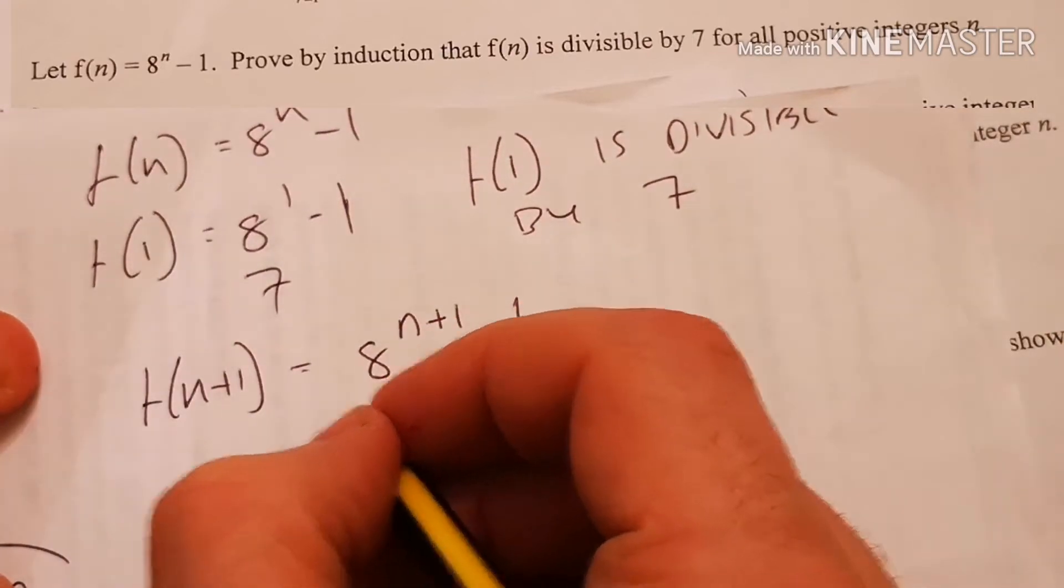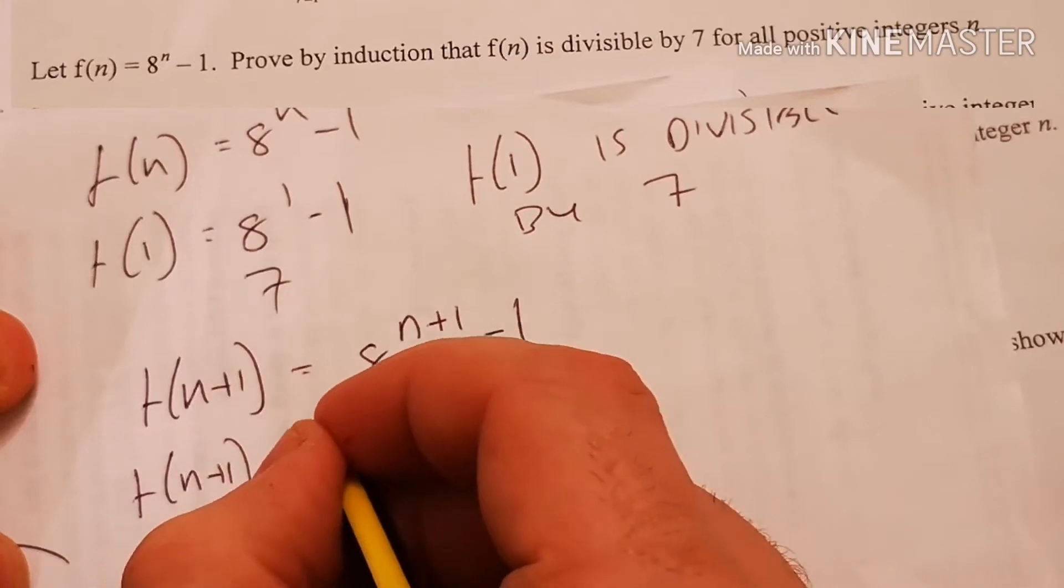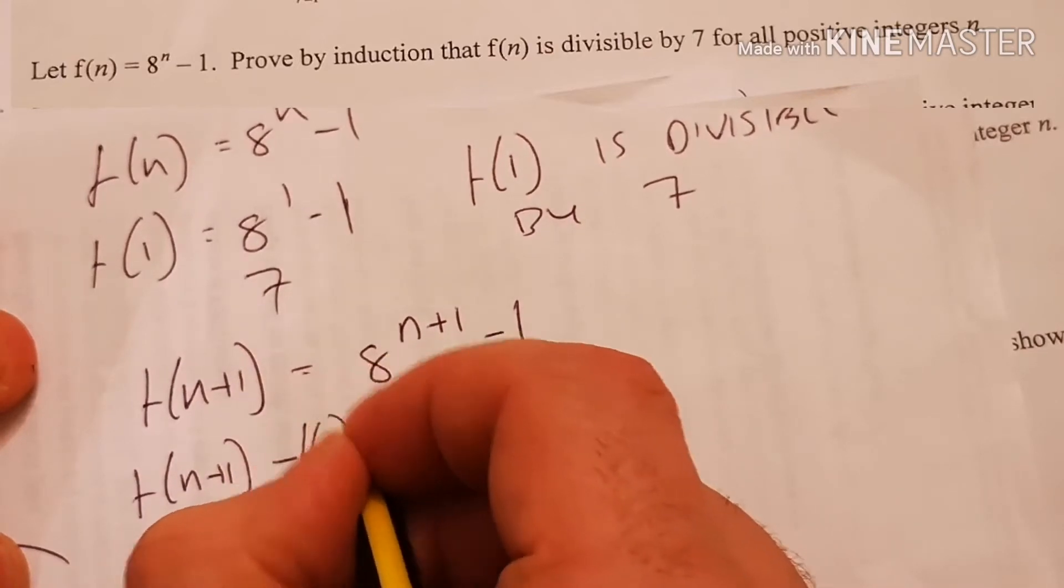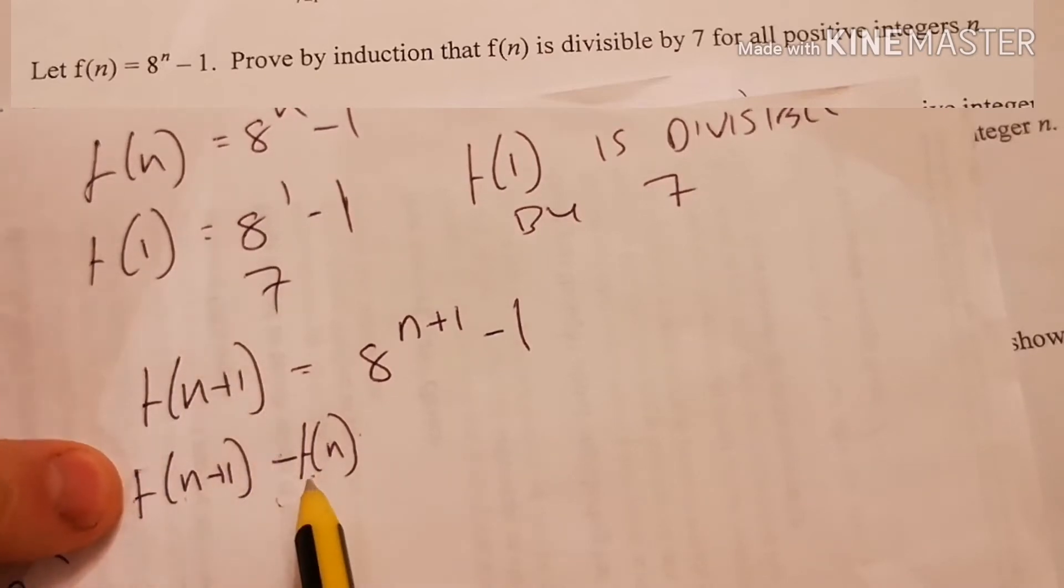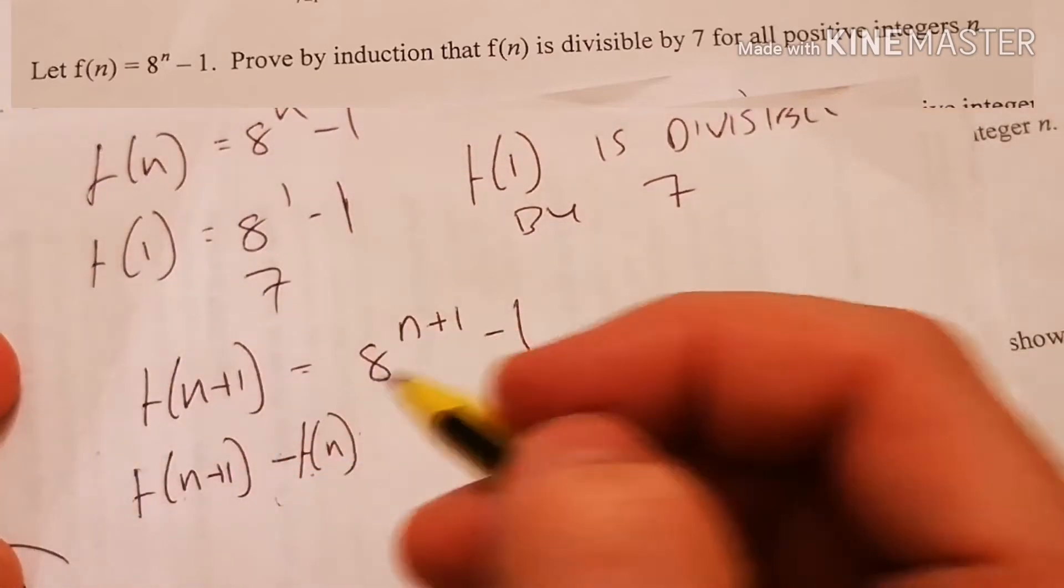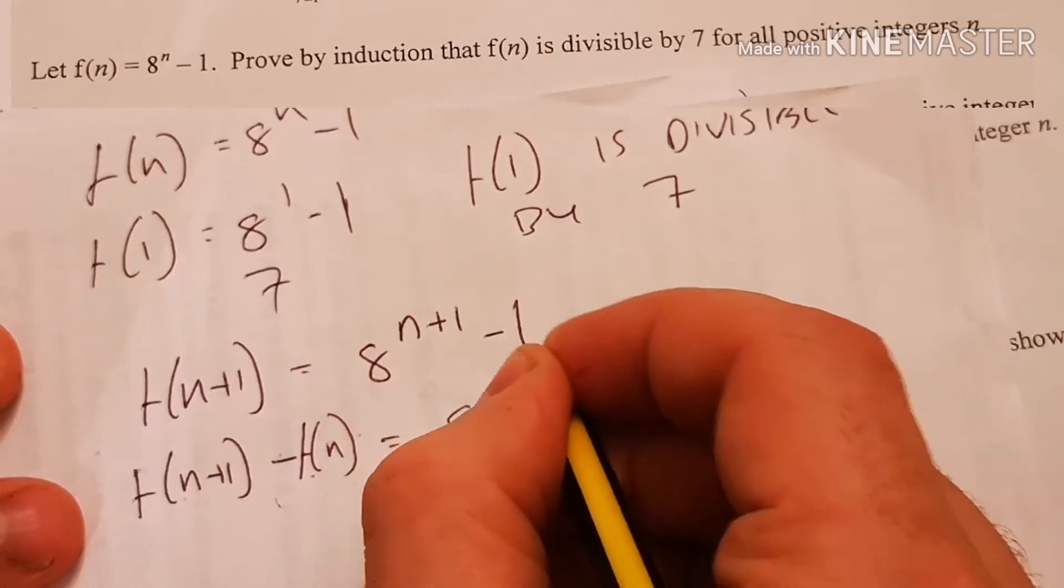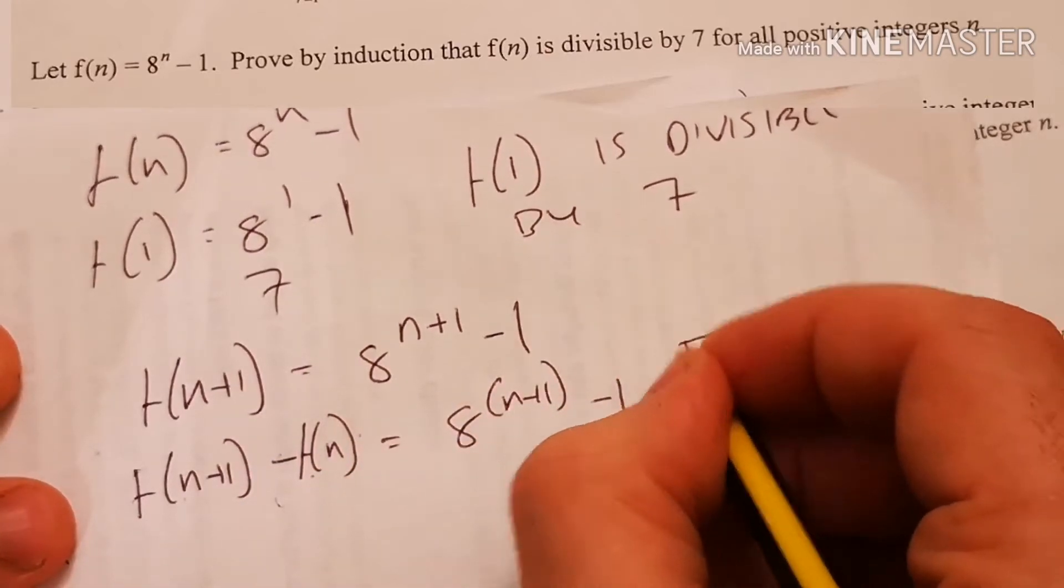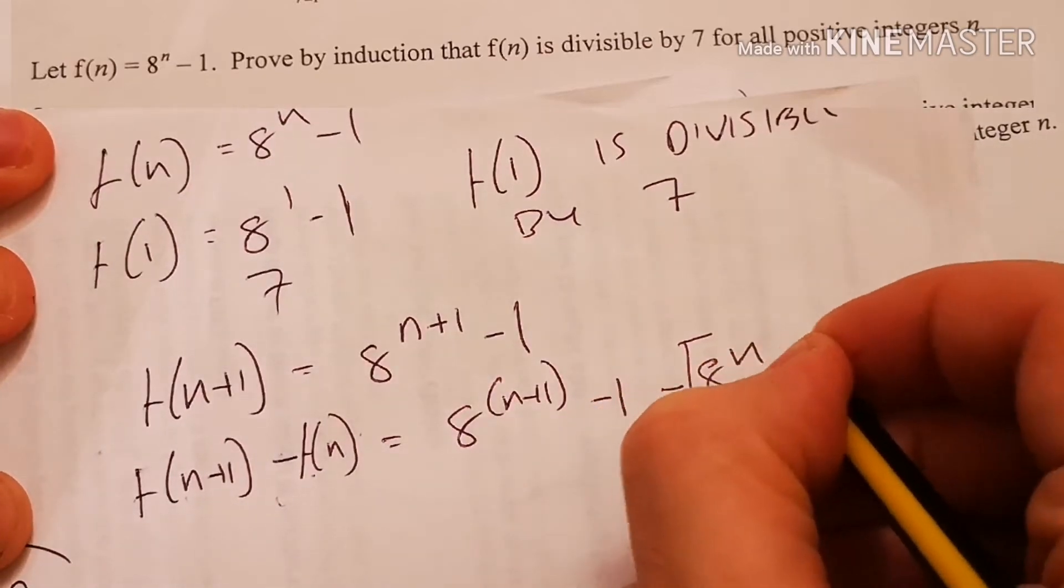Now if that is divisible by 7, if I do f(n+1) minus f(n), so if we know this is divisible by 7, a multiple of 7 minus another multiple of 7 should also be a multiple of 7. So I have 8^(n+1) minus 1 minus my original one, which was 8^n minus 1.